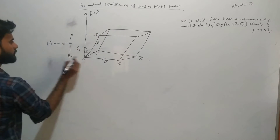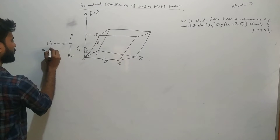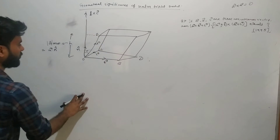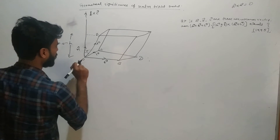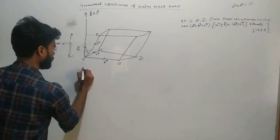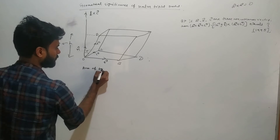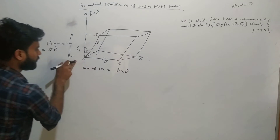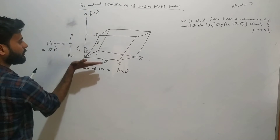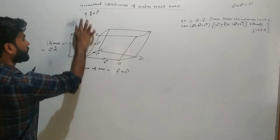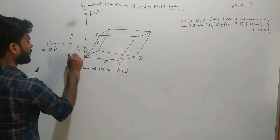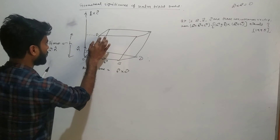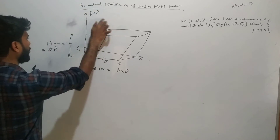So this is a vector in this direction — this is the projection of vector a on b cross c. Now the area of the base, that is the area of the parallelogram OBDC, will be written as |b cross c|. The unit direction in the b cross c vector is n̂. The projection of vector a on b cross c has been taken, and its result is the height h.